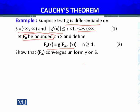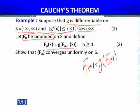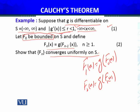The sequence of functions is defined by a recursive formula. For example, f_1(x) = G(f_0(x)), f_2(x) = G(f_1(x)), meaning each function f_n takes the previous function as input into G. G is differentiable and satisfies the derivative inequality |G'(x)| ≤ R < 1. We need to show that f_n converges uniformly on S, which is the set of all real numbers from minus infinity to plus infinity.